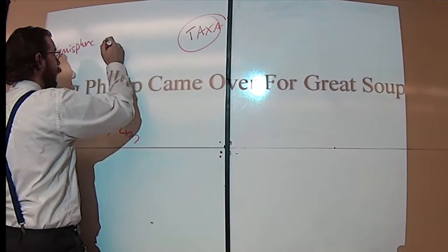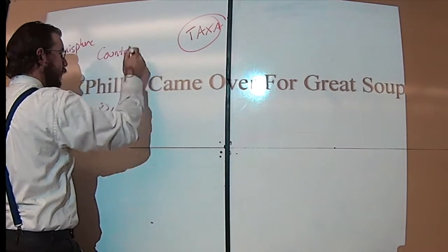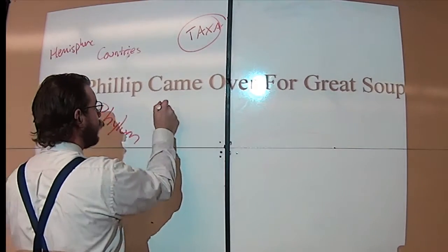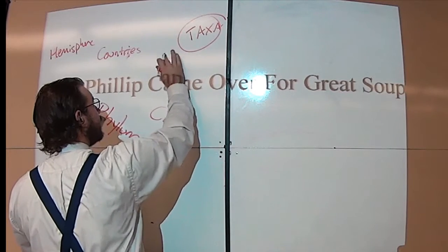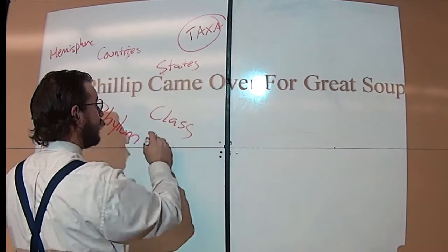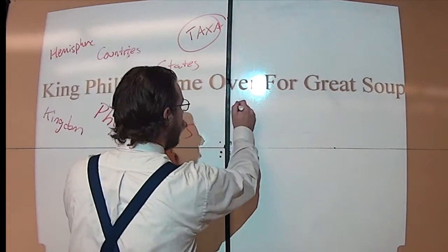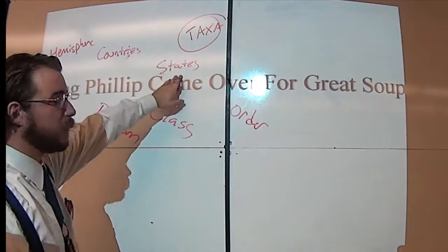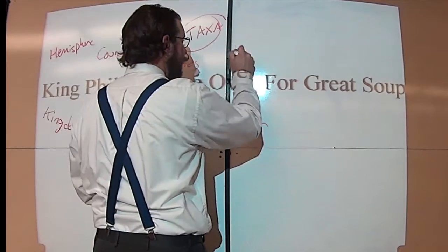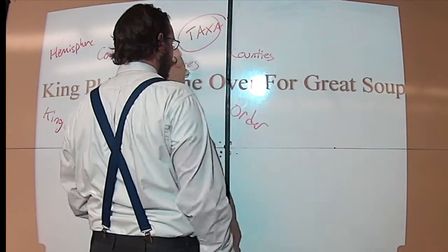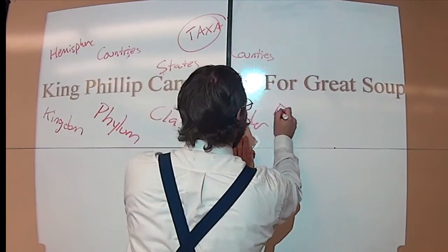You can break a hemisphere down into different countries. 'Came' is for class — every country can be broken down into different states, and every phylum can be broken down into different classes. 'Over' is for order — just like every state can be broken down into different counties, every class can be broken down into different orders.